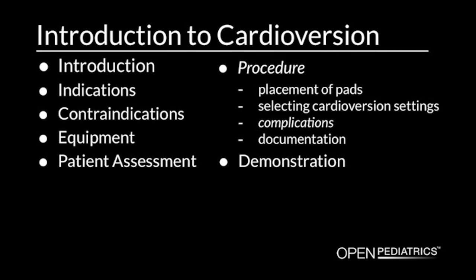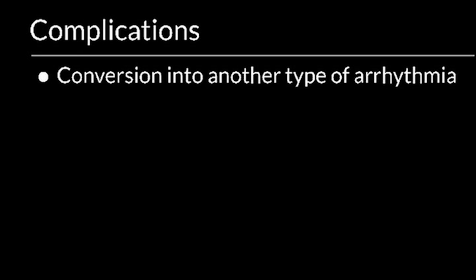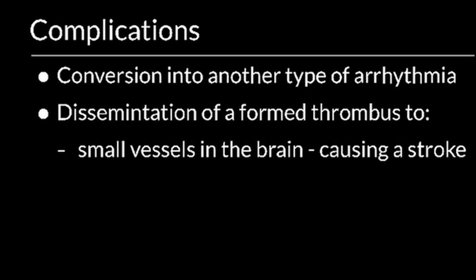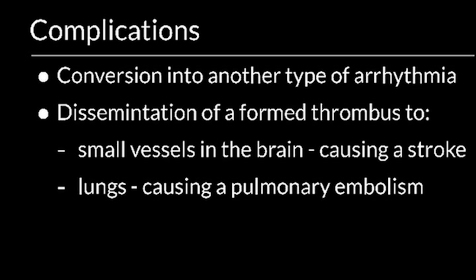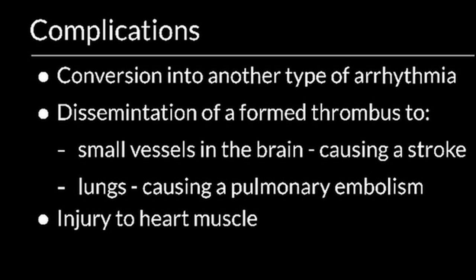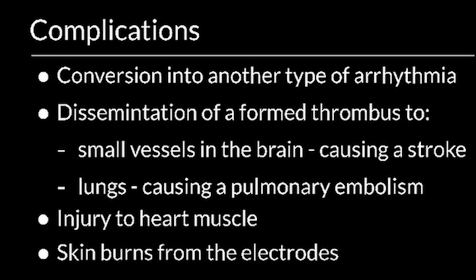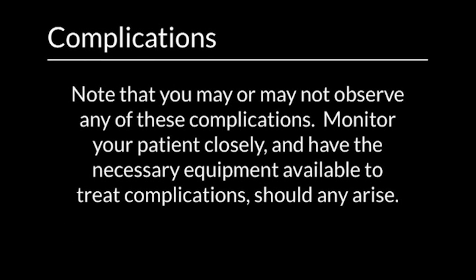The complications that you may observe include conversion into another type of arrhythmia, dissemination of a formed thrombus to the small vessels in the brain causing a stroke or the lungs causing a pulmonary embolism, injury to heart muscle, and skin burns from the electrodes. You may or may not observe any of these complications. Monitor your patient closely for signs or symptoms of complications and be prepared to manage them, including having the necessary equipment available to treat any complications should they arise.